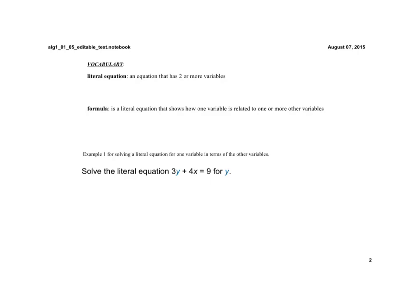Tonight we're starting with vocabulary. First, a literal equation is an equation that contains two or more variables. So far, we've been solving equations with just the same variable throughout. Now we'll have equations with two different or more variables. A formula is just a type of literal equation that shows how one variable is related to one or more other variables.